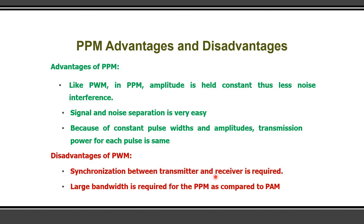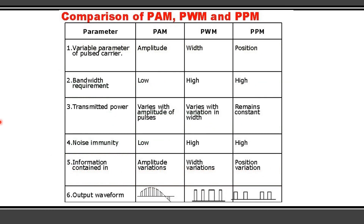The disadvantages of pulse position modulation are: synchronization between the transmitter and receiver is required — you must synchronize both ends to detect the signal correctly. Also, large bandwidth is required for PPM as compared to pulse amplitude modulation. Both pulse width modulation and pulse position modulation require more bandwidth compared with pulse amplitude modulation.